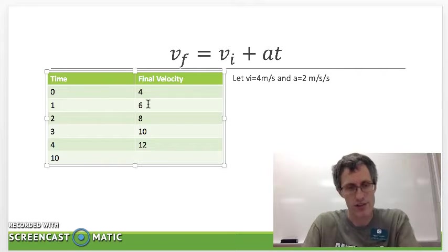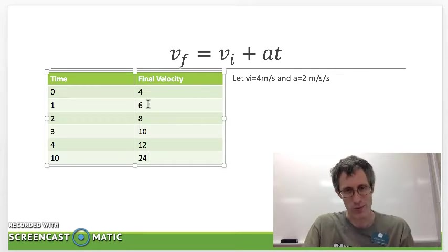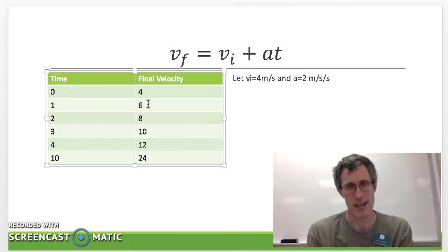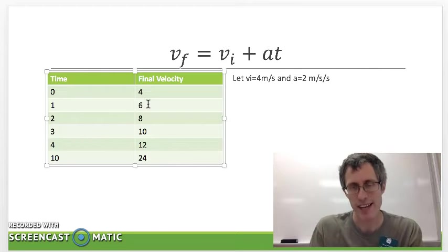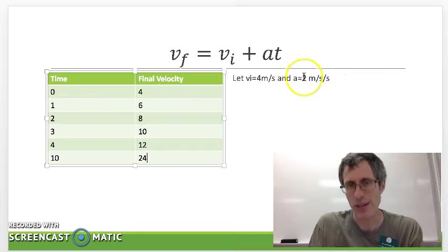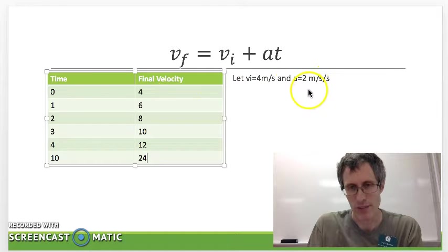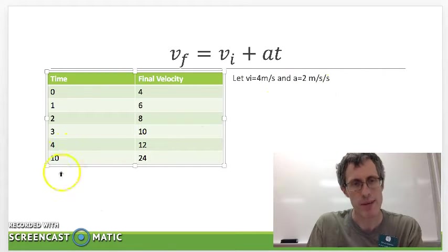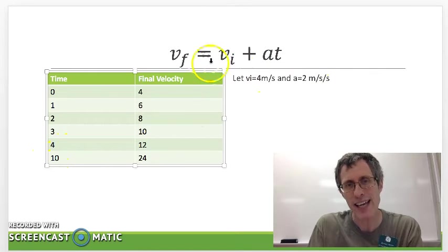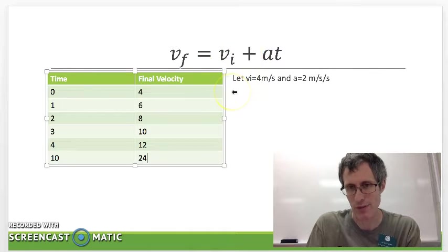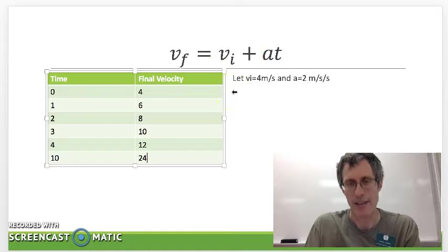Okay. If you guessed 24 you are correct. And I believe you got that by taking the acceleration which is 2 meters per second squared, multiplying that by the time which is 10 seconds, and then tacking on this initial velocity afterwards. And that is exactly what the equation says.